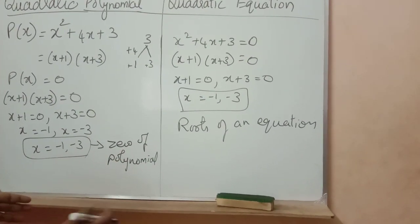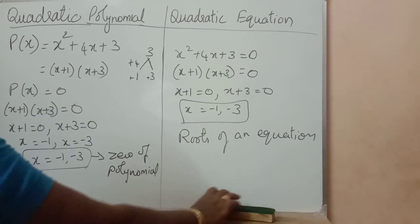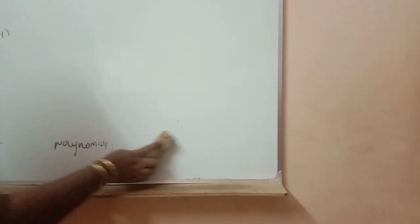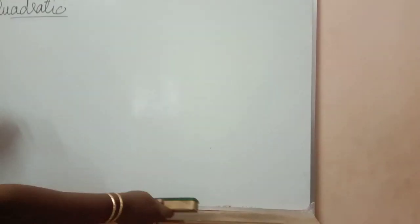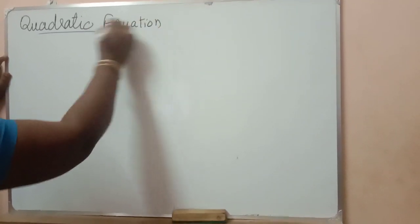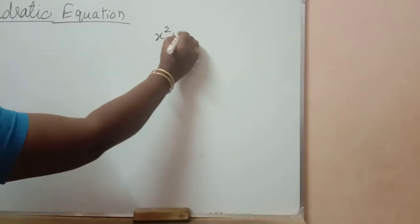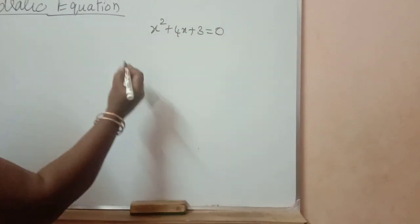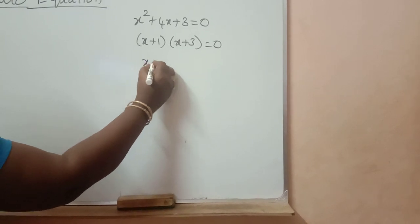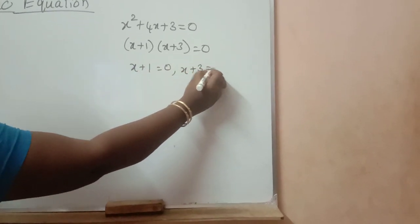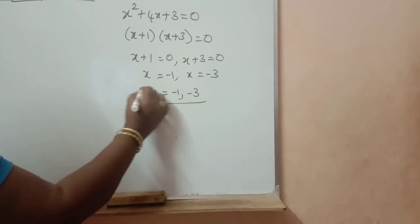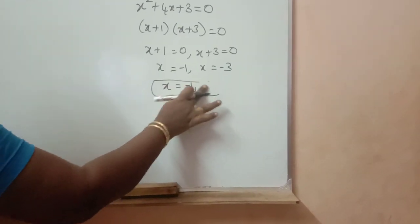I think you can understand the difference between polynomial and zero of polynomial and roots of equation. The value will be the same, but the name of those x values will be different. Again, x squared plus 4x plus 3 equal to 0. The factors are x plus 1 and x plus 3 equal to 0. So x equals minus 1 or x equals minus 3. The values of x are minus 1 comma minus 3.